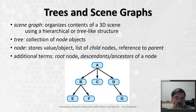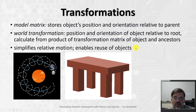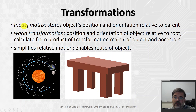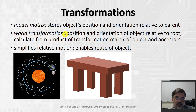Scene graphs are really useful for a few reasons. Scene graphs can be used to store all the different objects relative to each other. As we've discussed in a previous video, each object stores its position, orientation, and scale as a set of accumulated transformations in a single matrix called the model matrix. Each object in our scene will have a model matrix, and that will store its position and orientation relative to its parent, rather than relative to the root of the scene. The world transformation will be the position and orientation of the object relative to the root of the scene, and that's straightforward to calculate — you just calculate the product of the transformation matrix of each object with each of its ancestors.